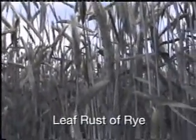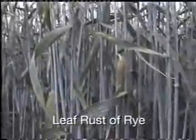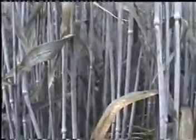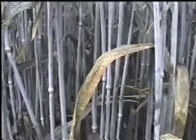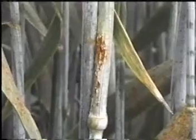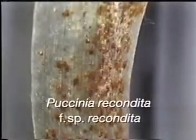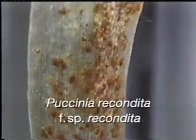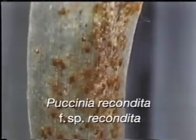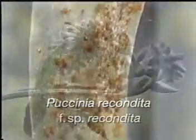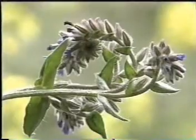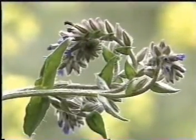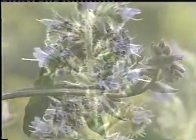Rye also is often affected by leaf rust. In fact, in many regions, leaf rust is the most important disease of rye. Rye leaf rust is caused by the forma specialis recondita of Puccinia recondita. In order to complete its life cycle, this fungus also needs an appropriate alternate host — asperifoliate plants like Anchusa or Echium.